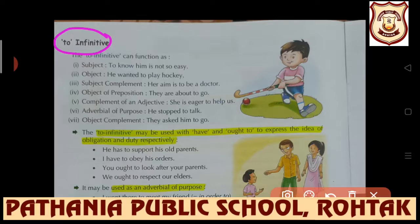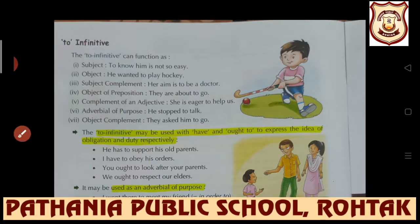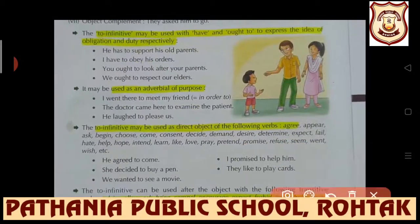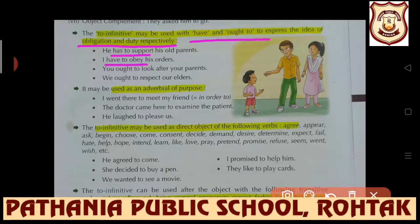For object complement also to-infinitives can be used: 'They asked him to go' - 'him' is the object here. To-infinitives may be used with 'have' and 'ought to' to express the idea of obligation and duty respectively: 'He has to support his old parents', 'I have to obey his orders', 'You ought to look after your parents.' Wherever obligation, duty, and responsibilities are there, with 'have' and 'ought to', to-infinitive can be used.